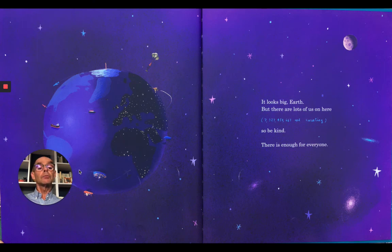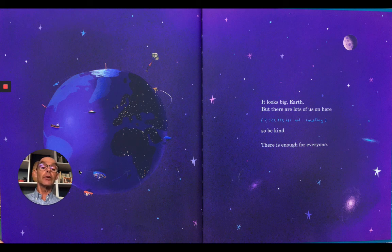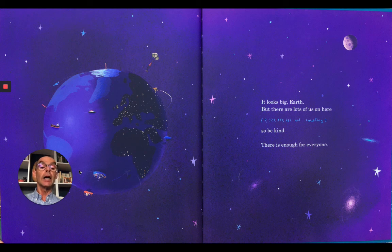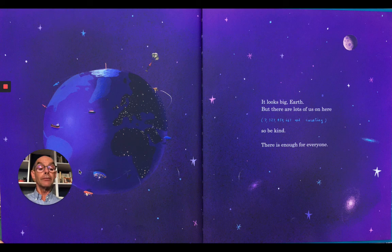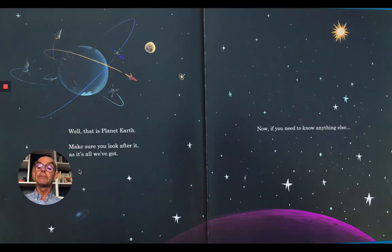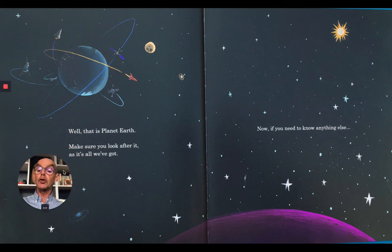It looks big, Earth, but there are lots of us on here. Over seven billion. Seven billion, three hundred and twenty seven million, four hundred and fifty thousand, six hundred and sixty seven. And counting. So be kind. There is enough for everyone.